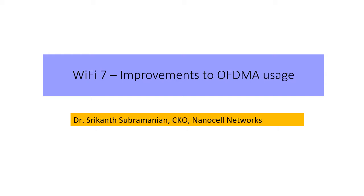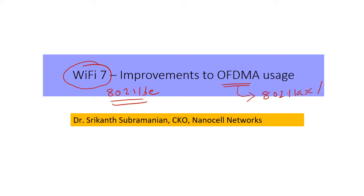I'd like to talk about some OFDMA impacts coming up in so-called Wi-Fi 7, IEEE 802.11be, which is still being standardized. This is from the continuing comments on OFDMA in 802.11ax or Wi-Fi 6, where I have videos talking about some aspects which have not maybe helped it achieve its potential. My name is Srikant and I'm with NanoCell Networks. The important point today is about the ability to handle resource units in the OFDMA implementation in Wi-Fi.